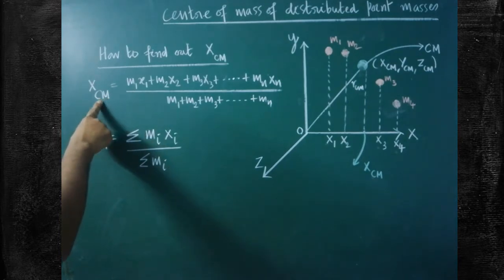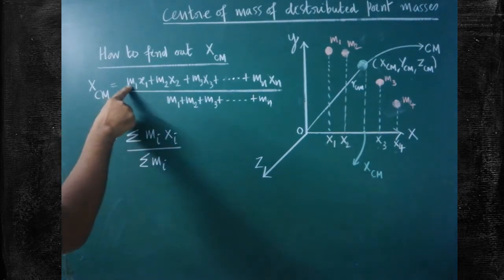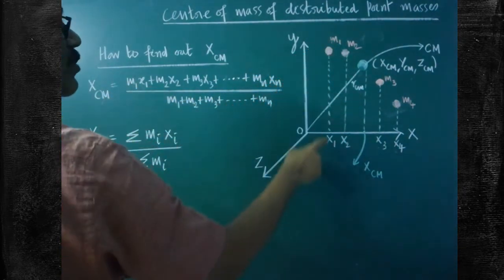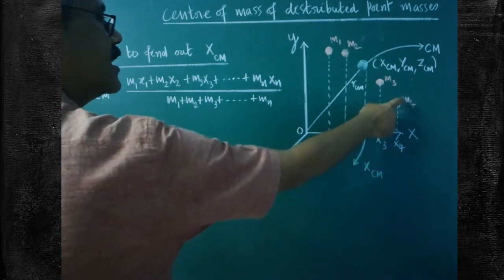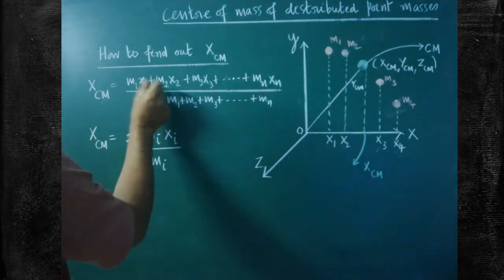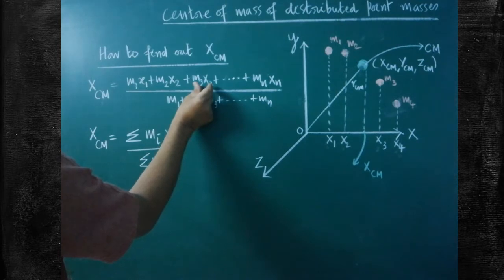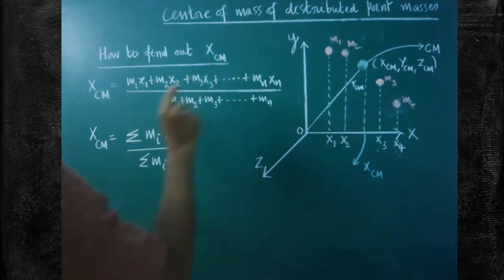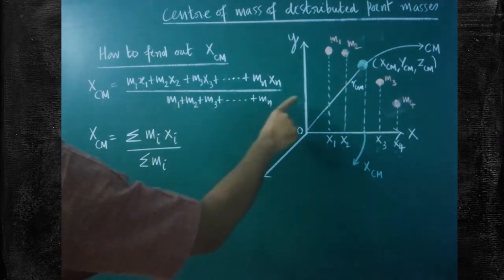XCM is the X coordinate of the center of mass. To find it, we multiply each mass by its X coordinate: M1 times X1, M2 times X2, M3 times X3, M4 times X4. These product values are all added together. For n number of particles, all product values — mass times respective coordinate — are summed, then divided by the sum of all masses M1, M2, M3, up to the nth mass.